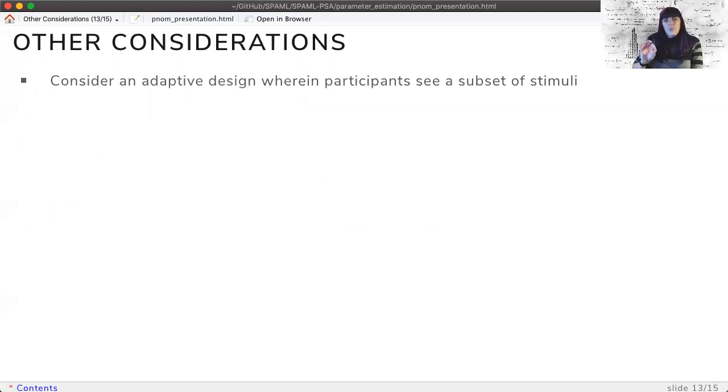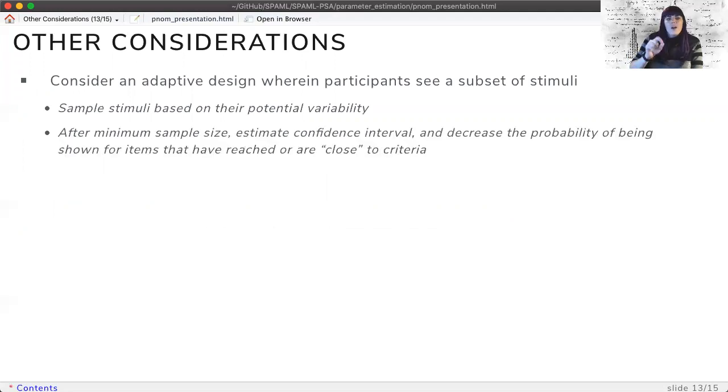Here are some other considerations that are possible for this type of targeted sample size procedure. You could consider using an adaptive design that probabilistically samples stimuli based on their potential variability. In our study, we are planning a thousand stimuli, and participants will only see a subset of these. However, we do not wish to bias participants by only showing them the weird words at the end, so we can use the previous variability to help us evenly spread stimuli across participants.